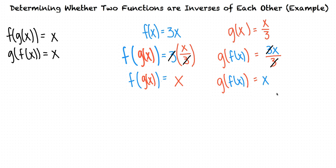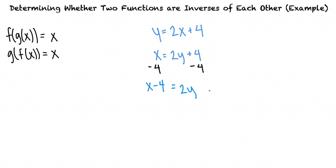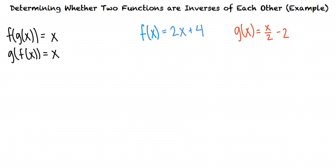Let's try a different example. Now we're given the function y equals 2x plus 4. Let's find the inverse of this function. We'll start by swapping the y and x. Now we want to get y by itself, so we'll subtract 4 from both sides and divide both sides by 2. So our original function is y equals 2x plus 4, and the inverse of this is x over 2 minus 2 equals y. Let's call our original function f of x and the inverse function g of x.